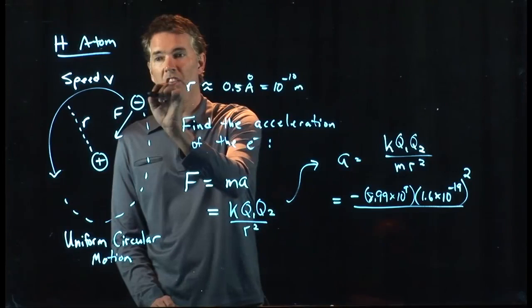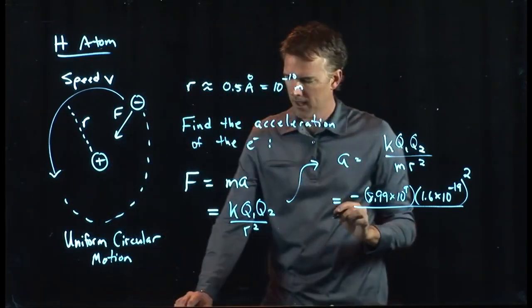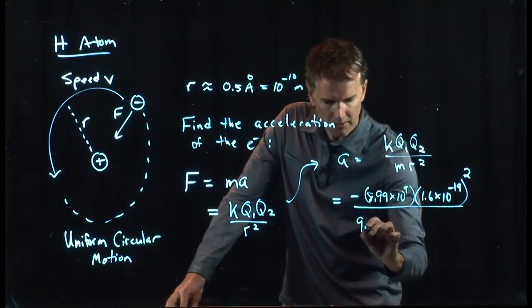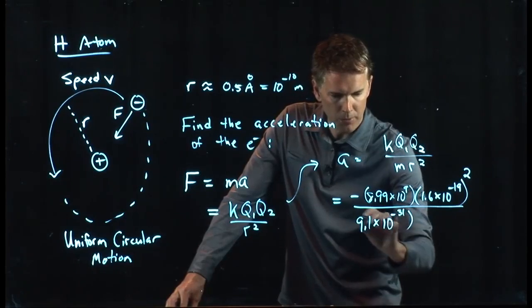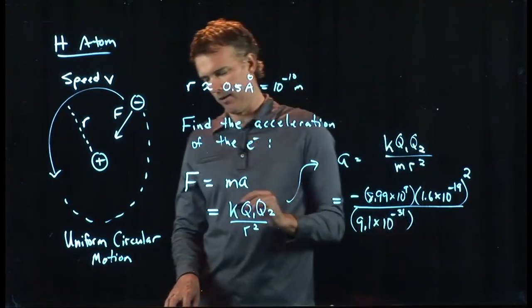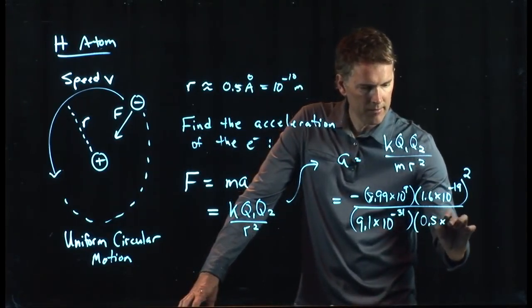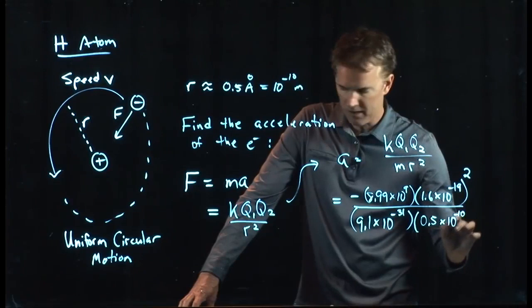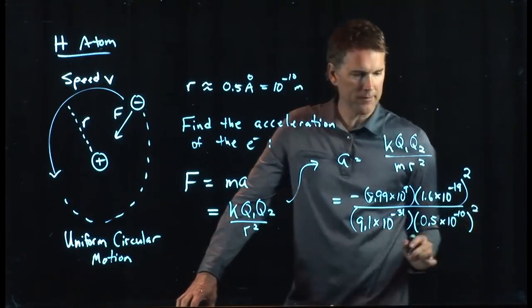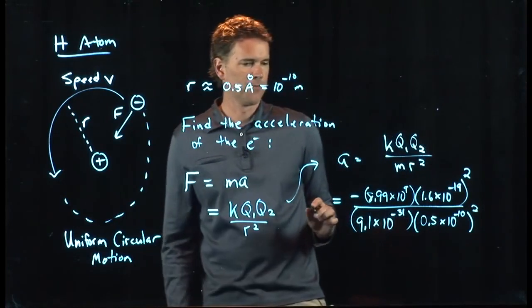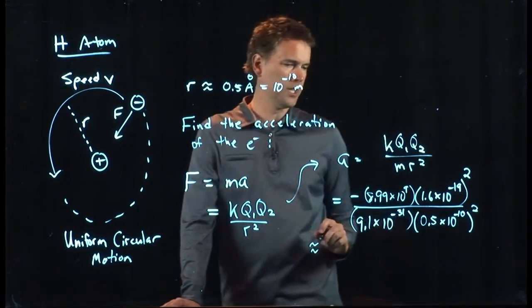And then we have the mass. It's the mass of the thing that's moving in the circle, so it's the mass of the electron. And you can look up the mass of the electron. It's 9.1 times 10 to the minus 31 kilograms. Remember, kilograms is SI units. And then we have 0.5 times 10 to the minus 10 is our distance. And we have to square that.